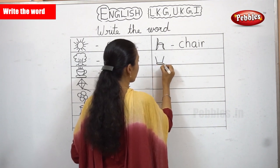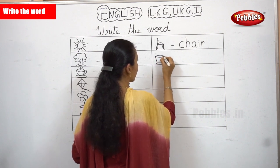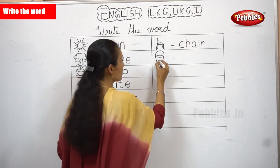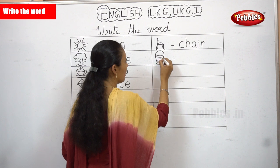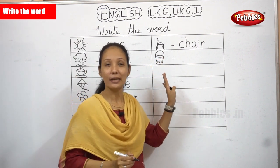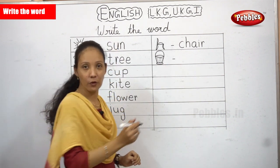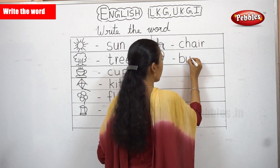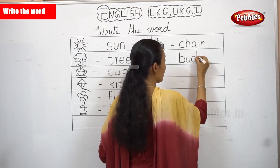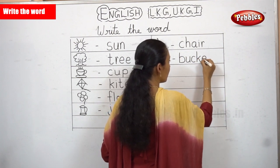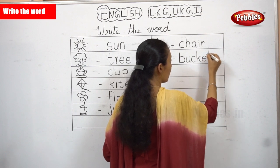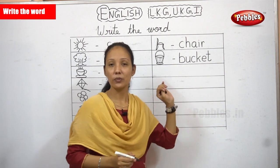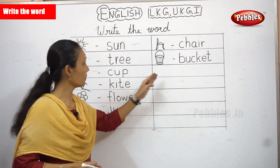It's all easy to draw. What is this? It's a bucket. Shall we learn the spelling for bucket? B-U-C-K-E-T. Bucket. Once again: B-U-C-K-E-T. Bucket. Next one.